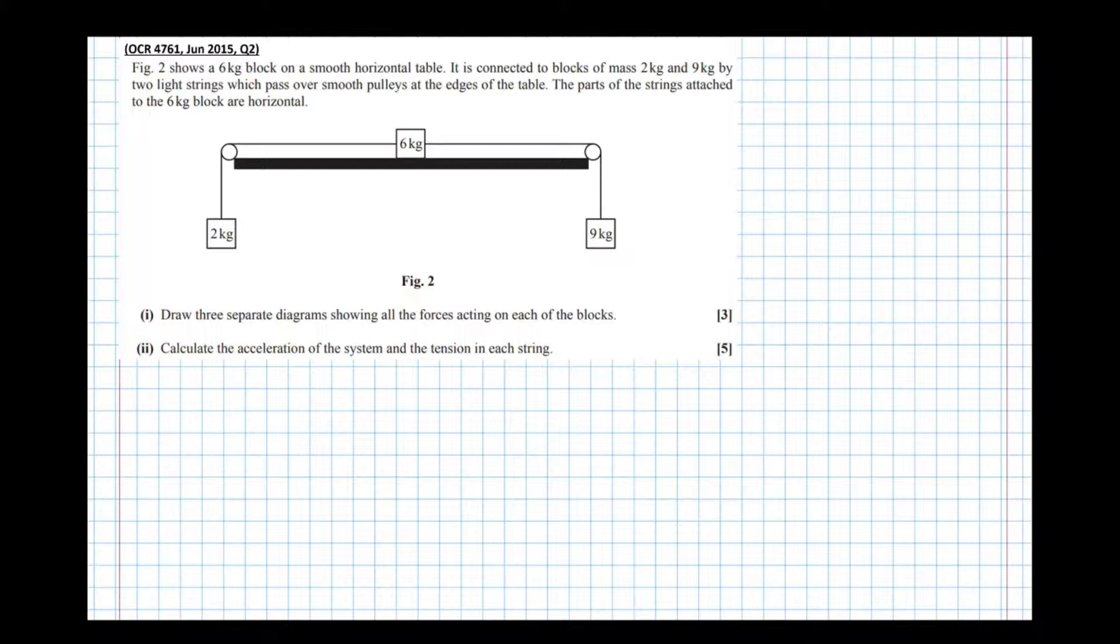It says figure two shows a six kilogram block on a smooth horizontal table. It is connected to blocks of mass two kilograms and nine kilograms by two light strings which pass over smooth pulleys at the edges of the table.